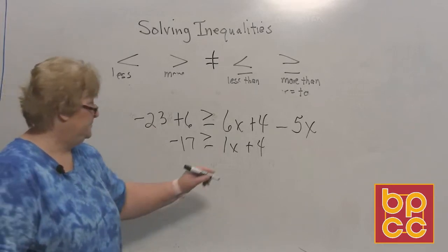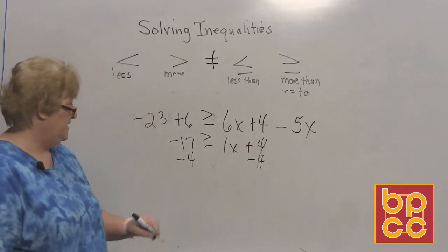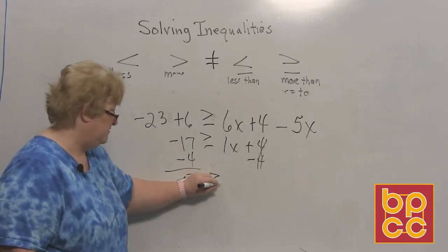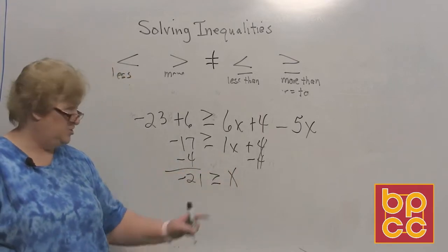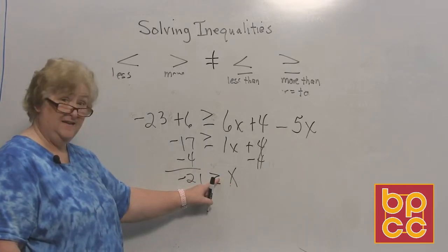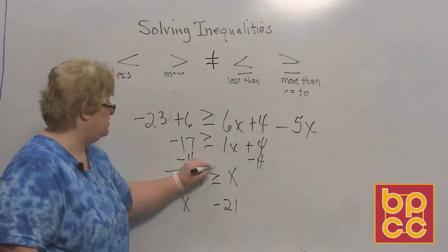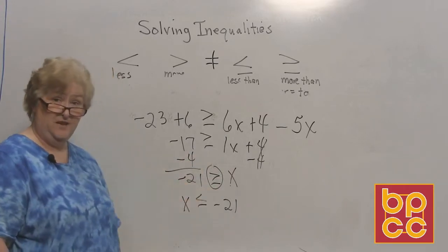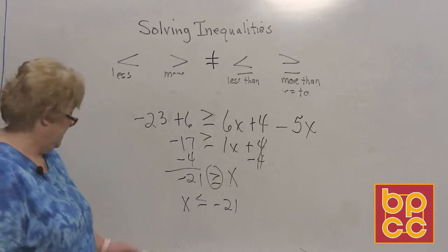Let's move the 4. Take away 4 from both sides. We now have a negative 21 is greater than or equal to x. If you want x on the left side, remember that when you switch sides you have to switch the sign so the statement says the same thing — x is less than or equal to negative 21. But you don't have to do that.